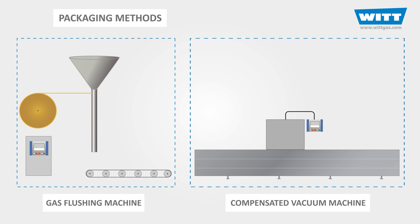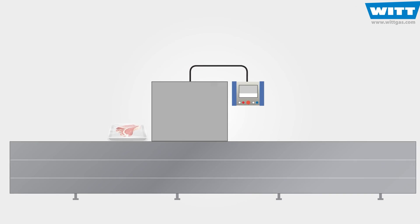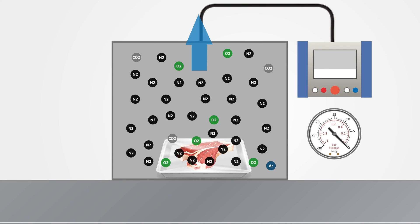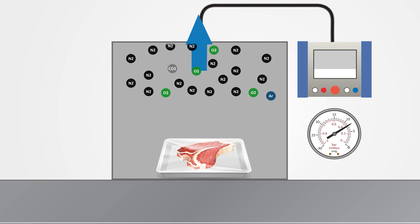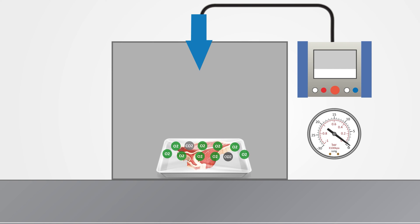The second method is called compensated vacuum. In this method, the machine first removes the air inside by pulling a vacuum within the package, and then breaks the vacuum with the desired gas mixture.